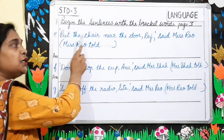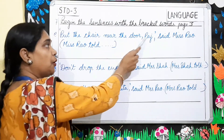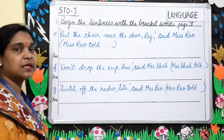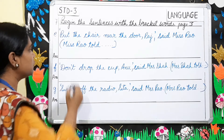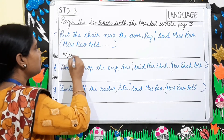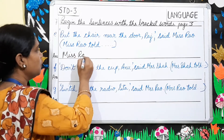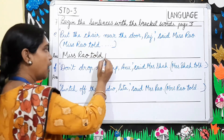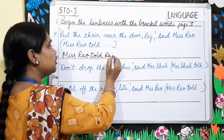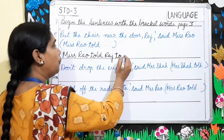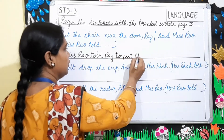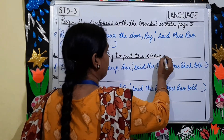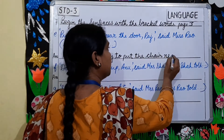Number E: 'Put the chair near the door, Raj,' said Mrs. Rao. In the bracket it's given 'Mrs. Rao told.' So you will start your sentence with 'Mrs. Rao told.' Mrs. Rao told Raj to put the chair near the door.